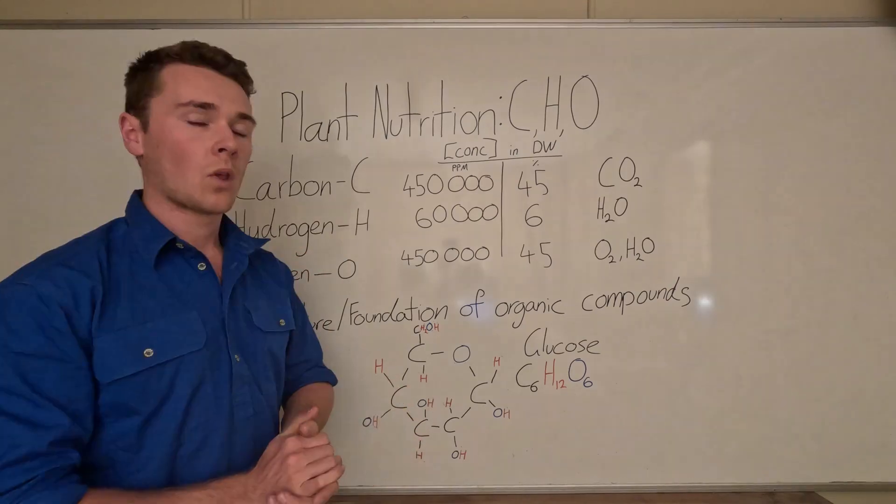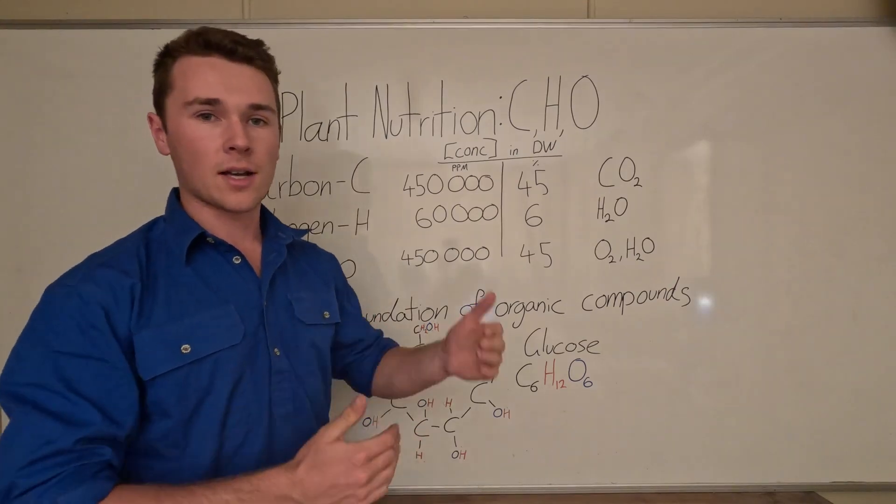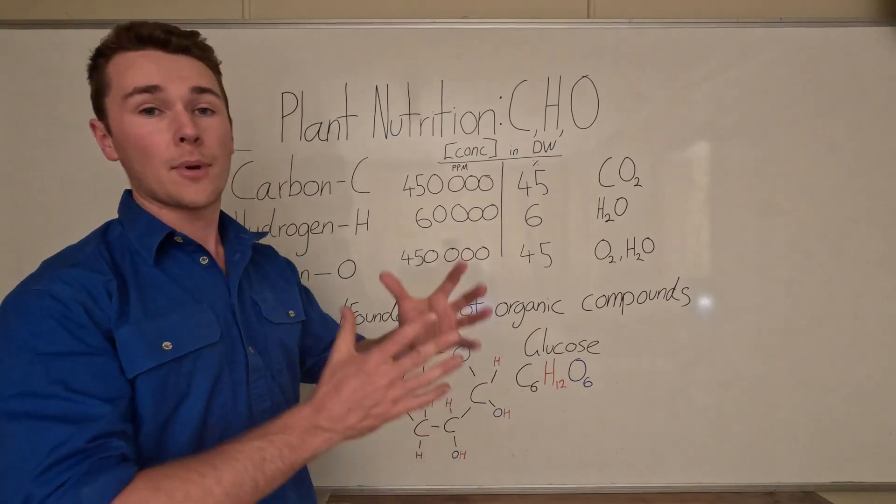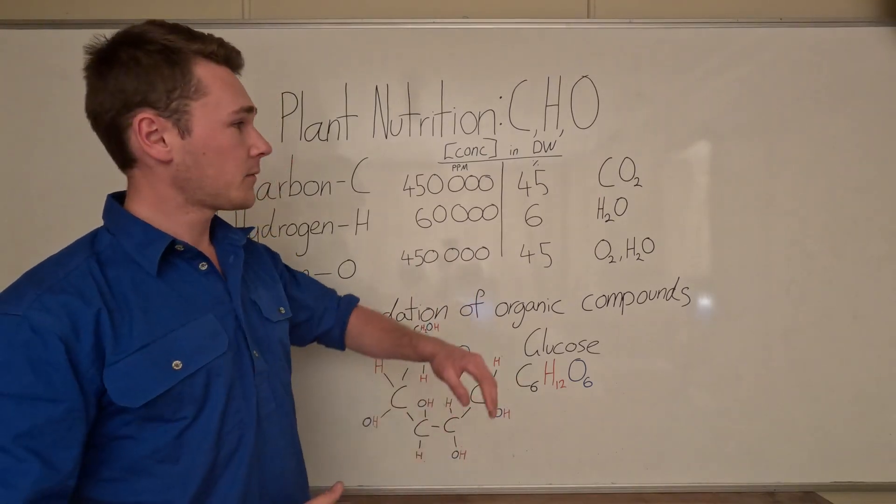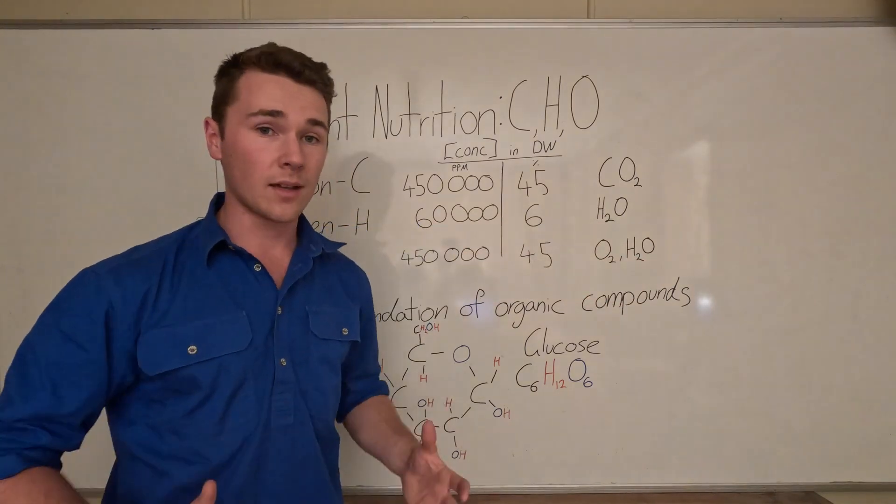So for example, glucose, which is the product of photosynthesis, which is one of the most important processes in a plant. Effectively, they take carbon dioxide and water and make sugar.